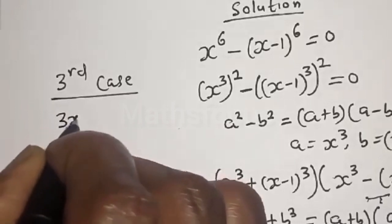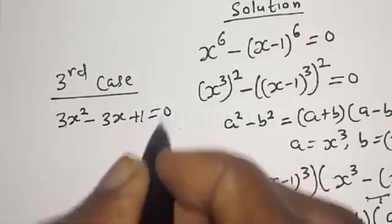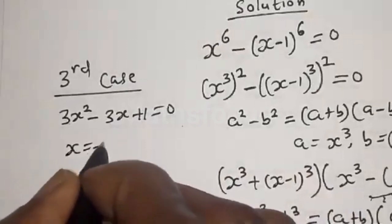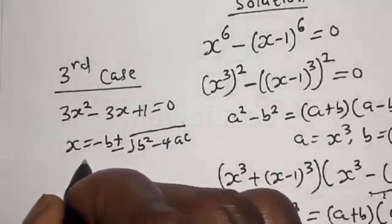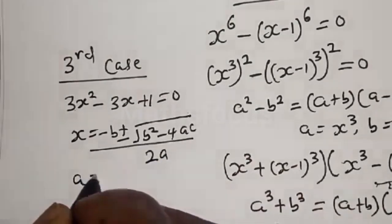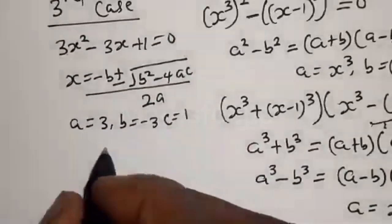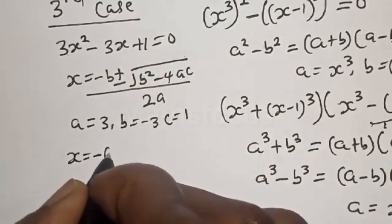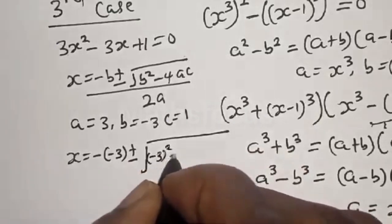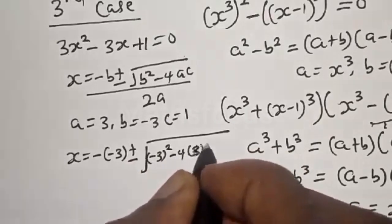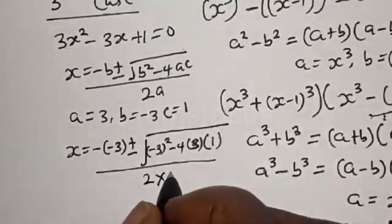For the third case, we have 3x squared minus 3x plus 1 equal to 0. This is also a quadratic equation: x equals minus b plus or minus square root of b squared minus 4ac, divided by 2a. Here a equals 3, b equals minus 3, c equals 1. Substituting: x equals minus minus 3, plus or minus square root of minus 3 squared minus 4 times 3 times 1, divided by 2 times 3.